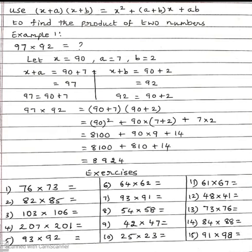This gives us 90² + 90(7+2) + 7×2. So 90 square = 90 × 90 = 8100. 7+2 = 9, 9×90 = 810, and 7×2 = 14. So we have 8100 + 810 + 14.